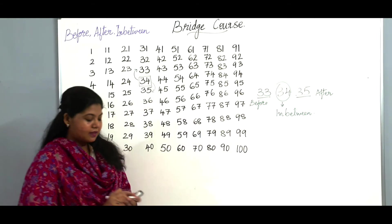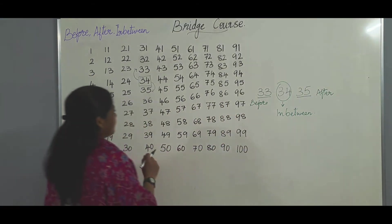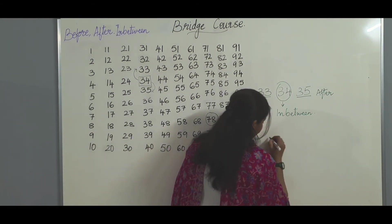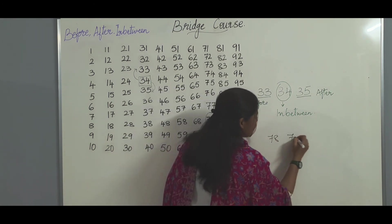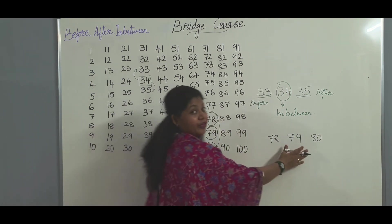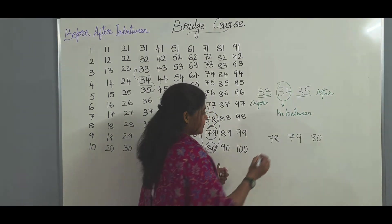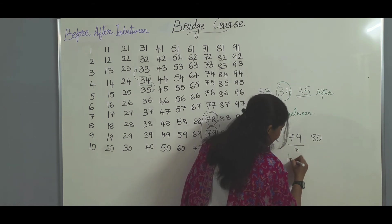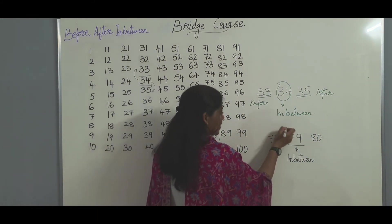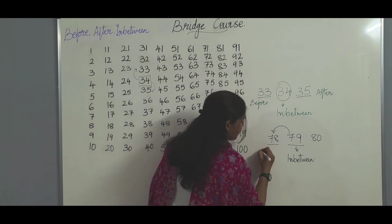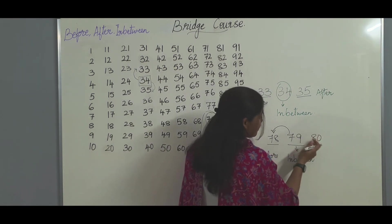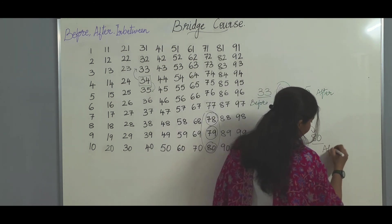Let us take one more example. Let us choose the number 78. So 78, 79, and 80 — I have written these three numbers here. The in-between number is 79. The number right before it is 78, so 78 is the before number. And the next number after 79, which is 80, is called the after number.